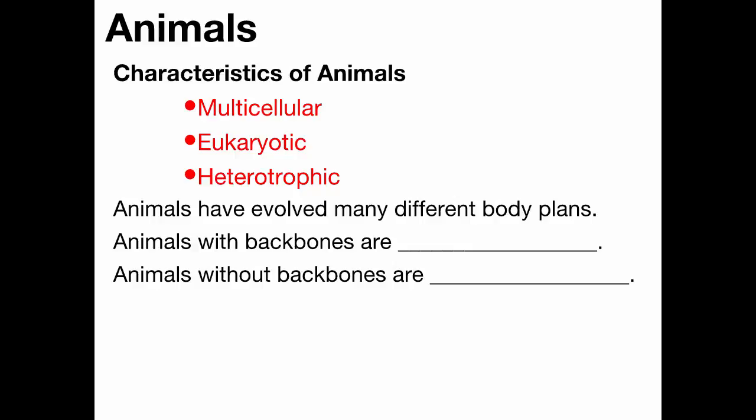Within the animal kingdom, we can think about two big groups. Some animals have a backbone — like these vertebrae — and we are animals with a backbone, we call them vertebrates. But there are also many, many animals that don't have a skeleton inside of them, don't have a backbone. We call them invertebrates.